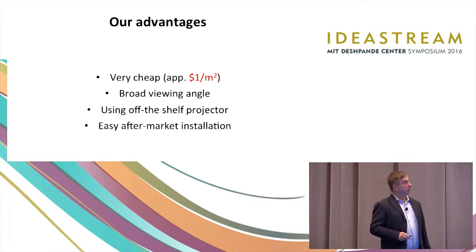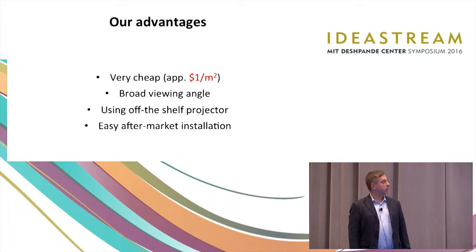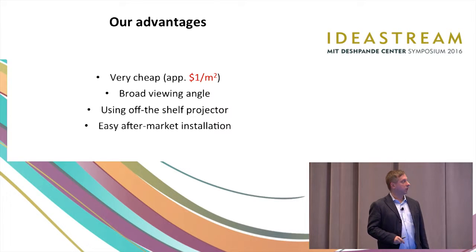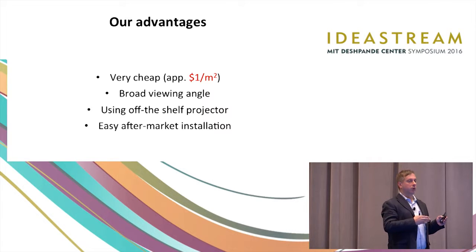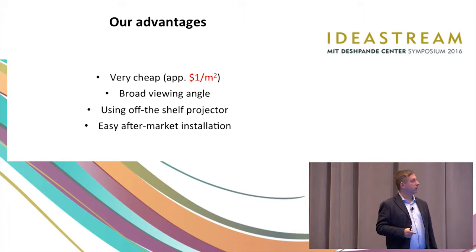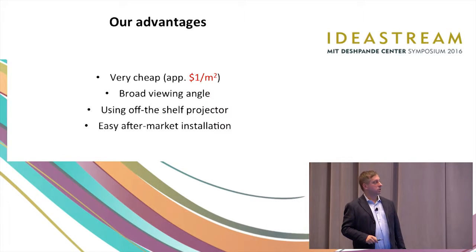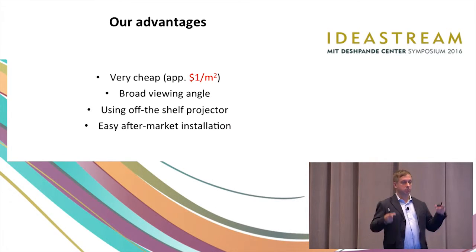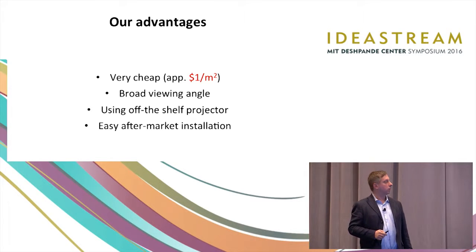But let me tell you first about our advantages. So this could be done very cheap. In interactions with glass manufacturers, we believe this could be done as low as $1 per meter squared. You have a very broad viewing angle. These images you can see them from almost any angle. We actually brought the demos so you can go see it next door during the break. You can do it using off-the-shelf projector. You don't need to develop special projectors for this. And you could potentially have easy aftermarket installations. So it could be just a sheet of polymer which you could potentially later put onto the already existing glass.